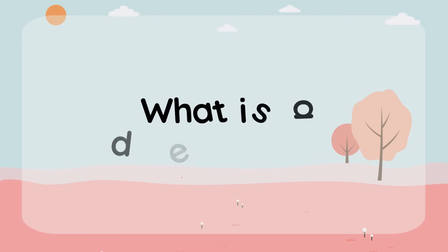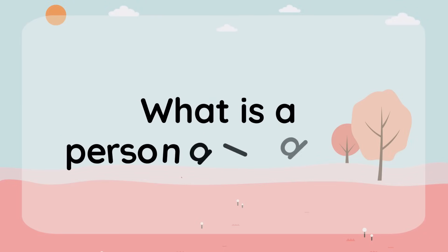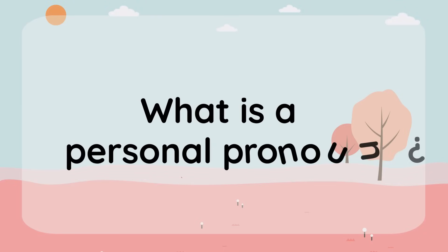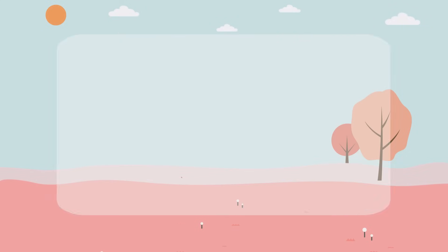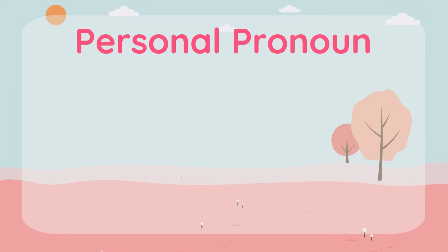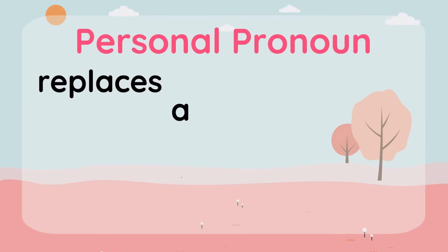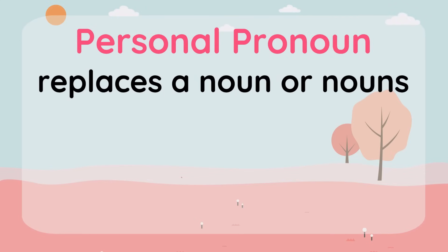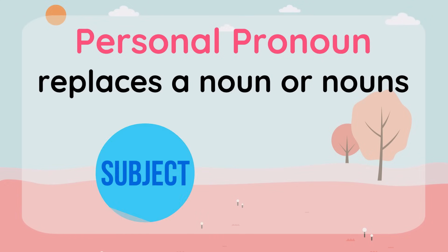We'll come back to this in a few minutes, but first — what's a personal pronoun? A personal pronoun replaces a noun or nouns in a sentence. There are two kinds of personal pronouns: subject and object.